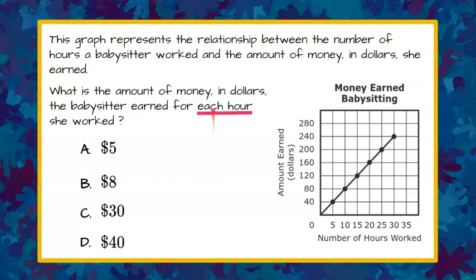So we're going to determine how much she earned in each hour — what she earned in one hour. We can look at our coordinate plane and graph, and we can see that our intervals for the hours worked is increasing by 5. So we cannot be sure what one hour is here because it's not marked, but we know that if we look at this first ordered pair, she worked 5 hours and earned $40.